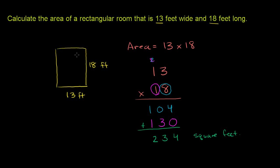And if you were to actually draw a grid where you drew 18 lines in this direction and 13 lines in that direction, if you were to count all of the boxes, you would get 234.